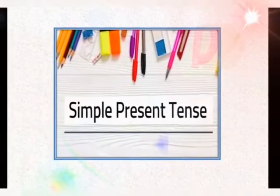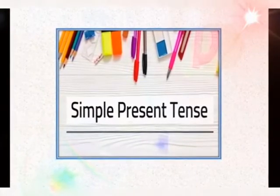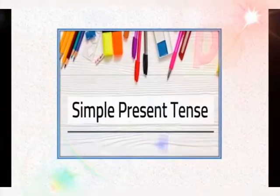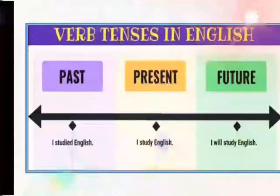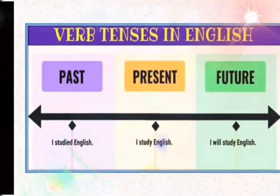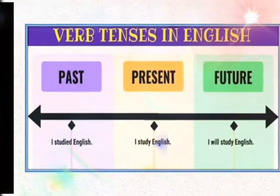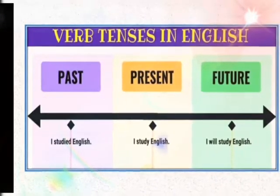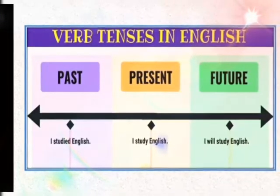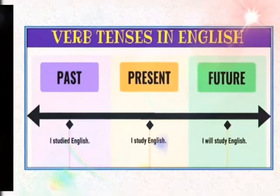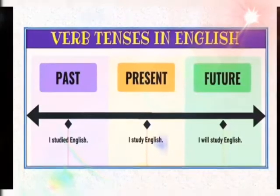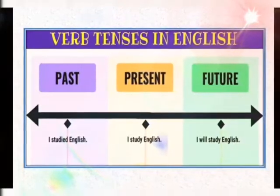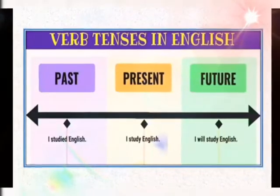But before that, let's revise what we have done till now. There are three types of tenses in English: past tense, present tense, and future tense. We have also done simple present tense — let's revise it again.